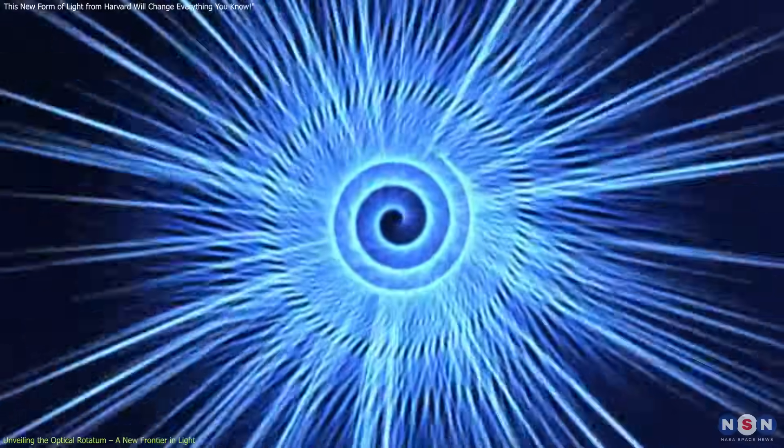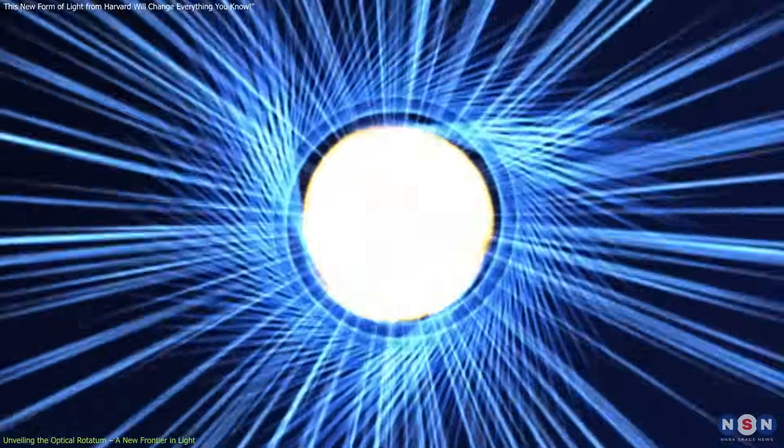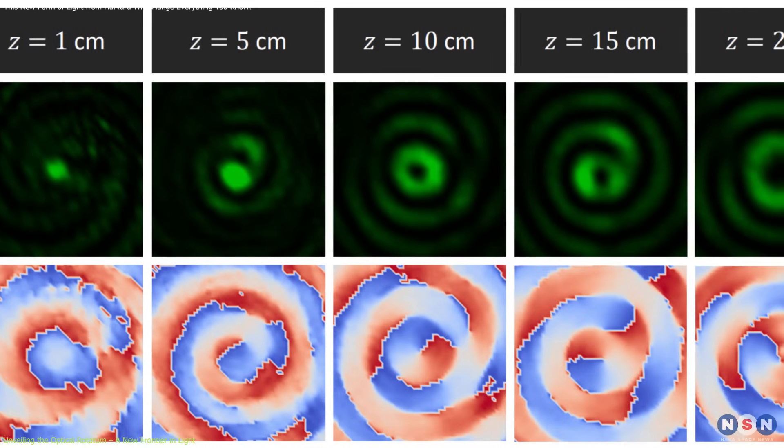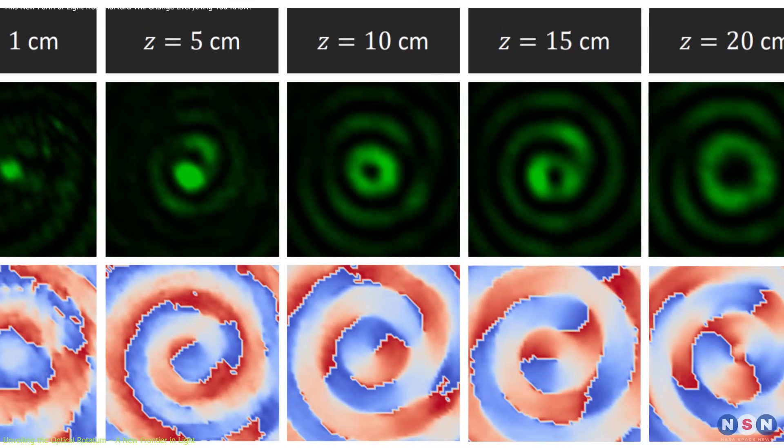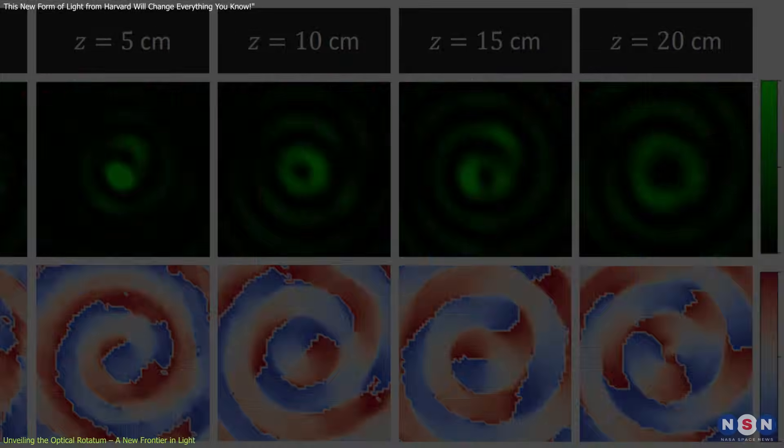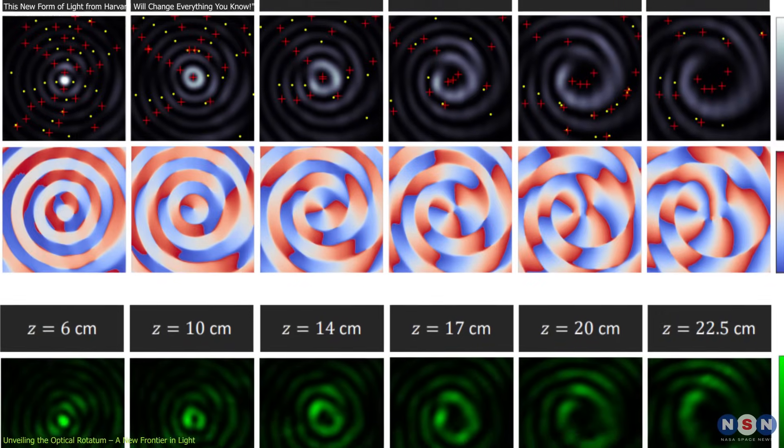However, the optical rotatum introduces a novel behavior. As it travels, its twisting motion doesn't remain constant but changes at different rates in different regions, creating unique and complex patterns.